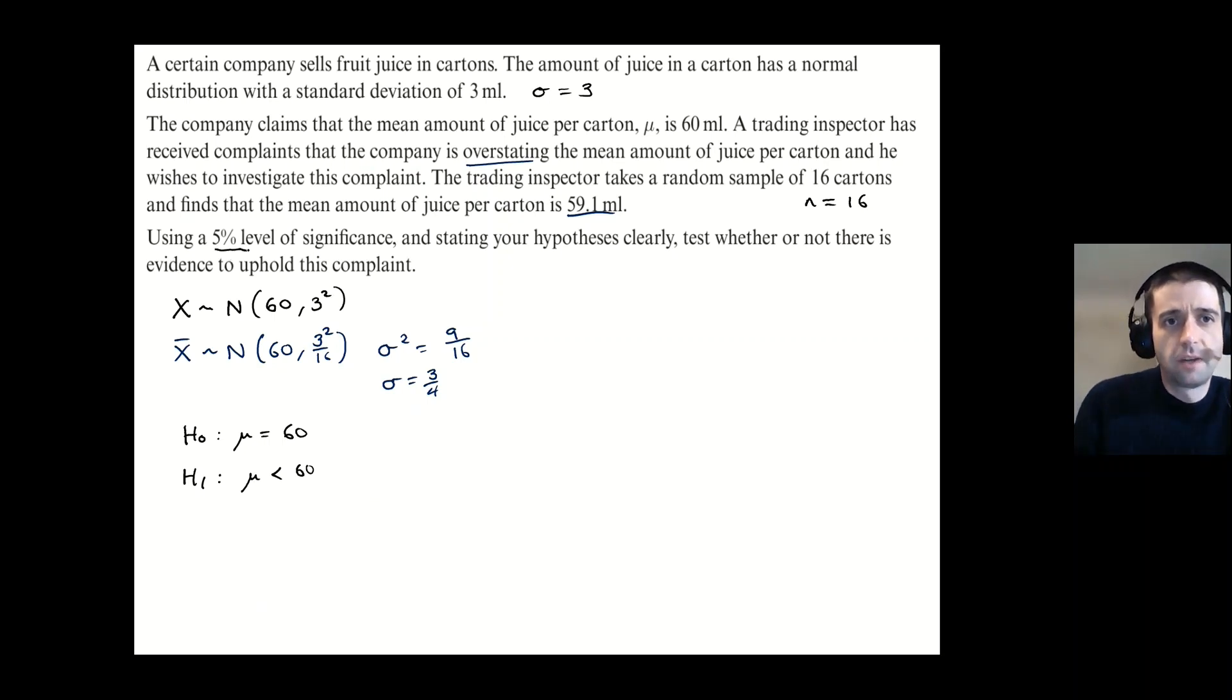Now, we've been asked to use a 5% level of significance. So I'm going to write out my criteria for rejecting H₀ now, and I'm going to be rejecting H₀ if the probability that X̄, so my sample, is less than 59.1, which is the value that I've been given to test, I'm going to reject H₀ if that is less than or equal to 0.05. So 5%. And I'm now going to use my calculator to find the probability of this happening with this distribution here and go from there. So I'm just going to go over here and do that.